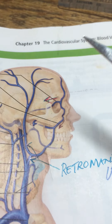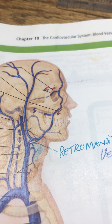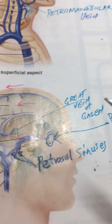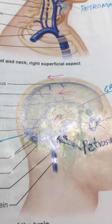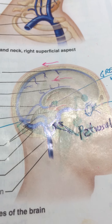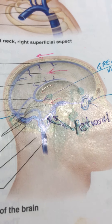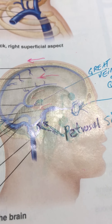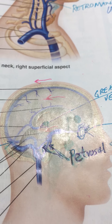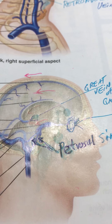That pretty much tells us the story up there. Next, we are going to take a look inside the skull at the intracranial venous sinuses, which we'll pick up in the next section.